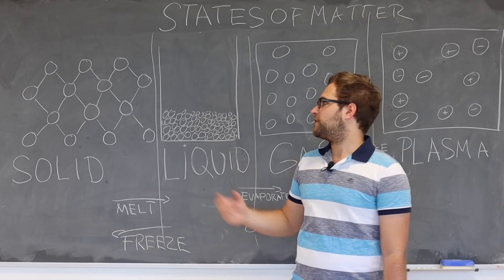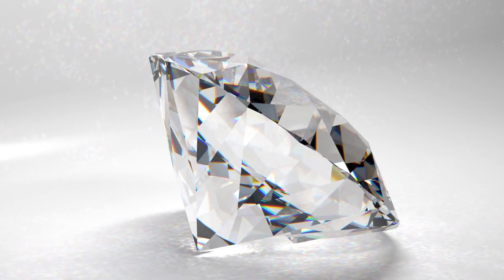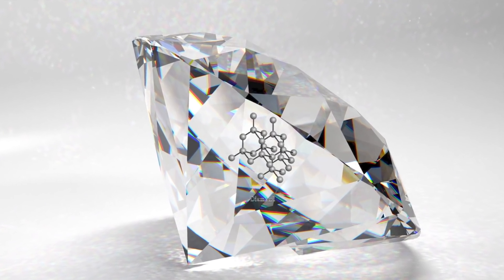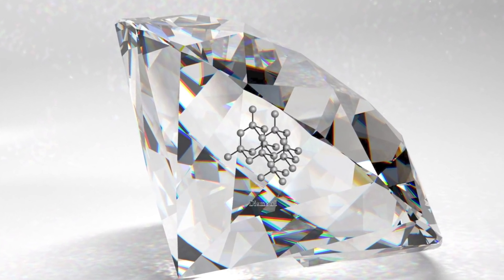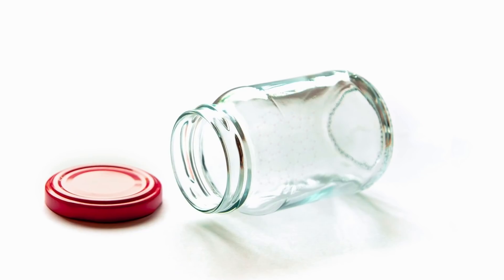Depending on if there's an order between the different molecules in a solid, we might classify them. One example is a crystalline solid in which the molecule structure repeats periodically. Another example is if there's no order at all and the molecules don't show any long-range order; then we speak of an amorphous solid.